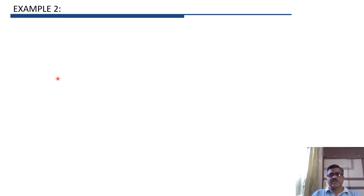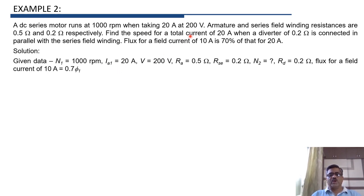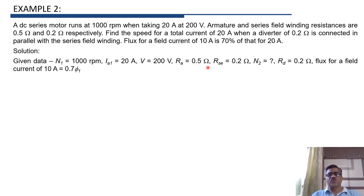Let us solve Example 2. A DC series motor runs at N1 equals 1000 rpm, taking Ia1 equals 20 ampere at a supply voltage V equals 200 volt. Armature resistance Ra is 0.5 ohm and series field winding resistance Rse is 0.2 ohm.